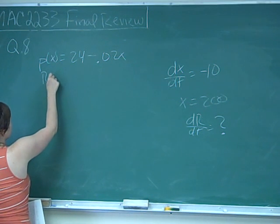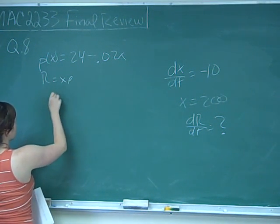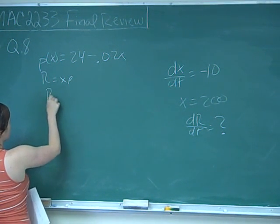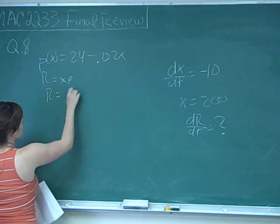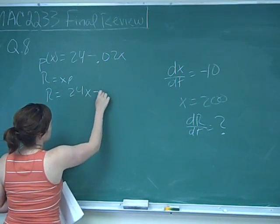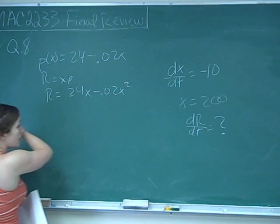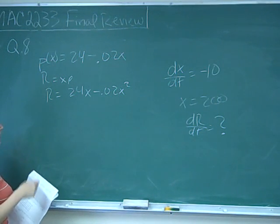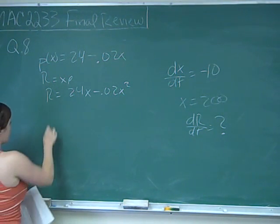Revenue is equal to X times demand. So our revenue function is R equals 24X minus 0.02X squared. Then we differentiate this with respect to time.